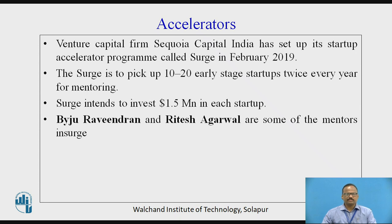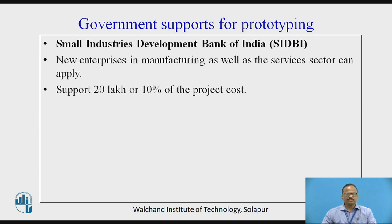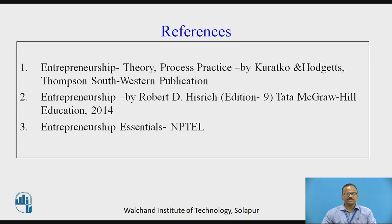One example is Baijus. Ravindra and Ritesh Agarwal are some of the mentors for InSearch. InSearch picks up 10 to 20 early-stage startups twice every year for mentoring. Certain government supports are also available for prototyping: the Department of Scientific and Industrial Research, SIDBI TI-FSE, and the Ministry of Small and Medium Enterprises. SIDBI is one of the famous organizations which supports entrepreneurs up to 20 lakhs or 10% of the project cost. These are the references used to create this video.